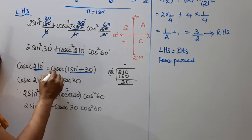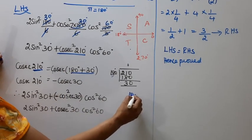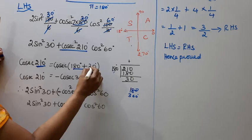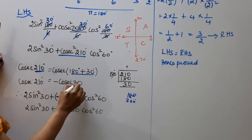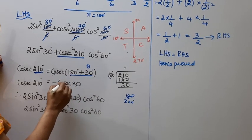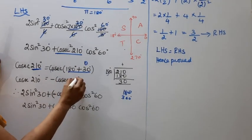Now, cosecant 180 plus theta. For 180 plus theta, cosecant becomes negative cosecant theta. So cosecant 180 plus theta equals negative cosecant theta. Theta here is 30, so it becomes negative cosecant 30 degrees.